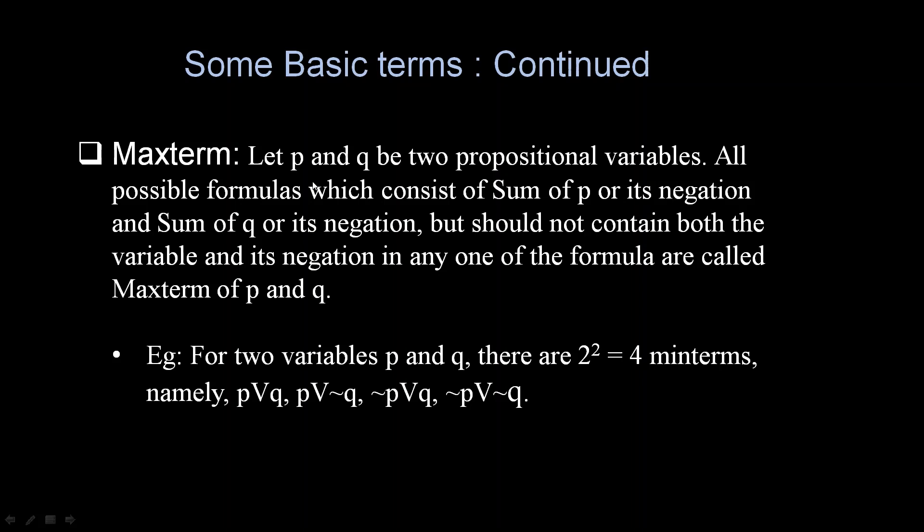Now, what is the Maxterm? Let P and Q be two propositional variables. All possible formulas which consist of sum of P or its negation and sum of Q or its negation, but should not contain both the variables and its negation in any one formula are called maxterm. For example, for two variables P and Q, there are 2² = 4 maxterms, namely: P∨Q, P∨¬Q, ¬P∨Q, ¬P∨¬Q.